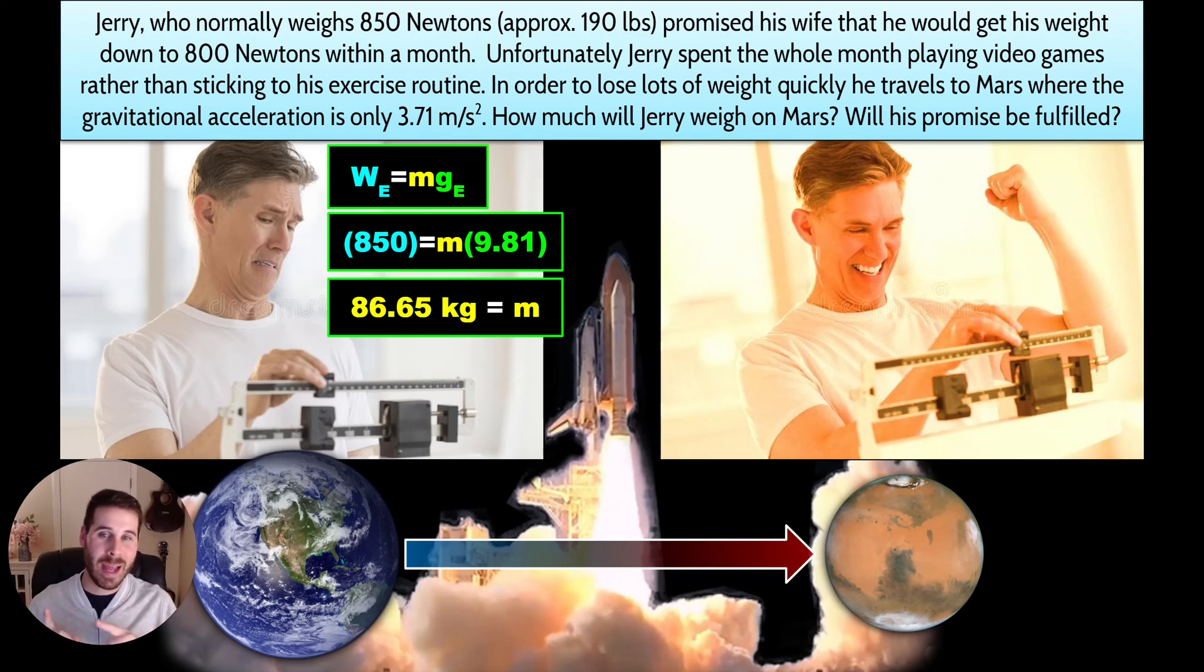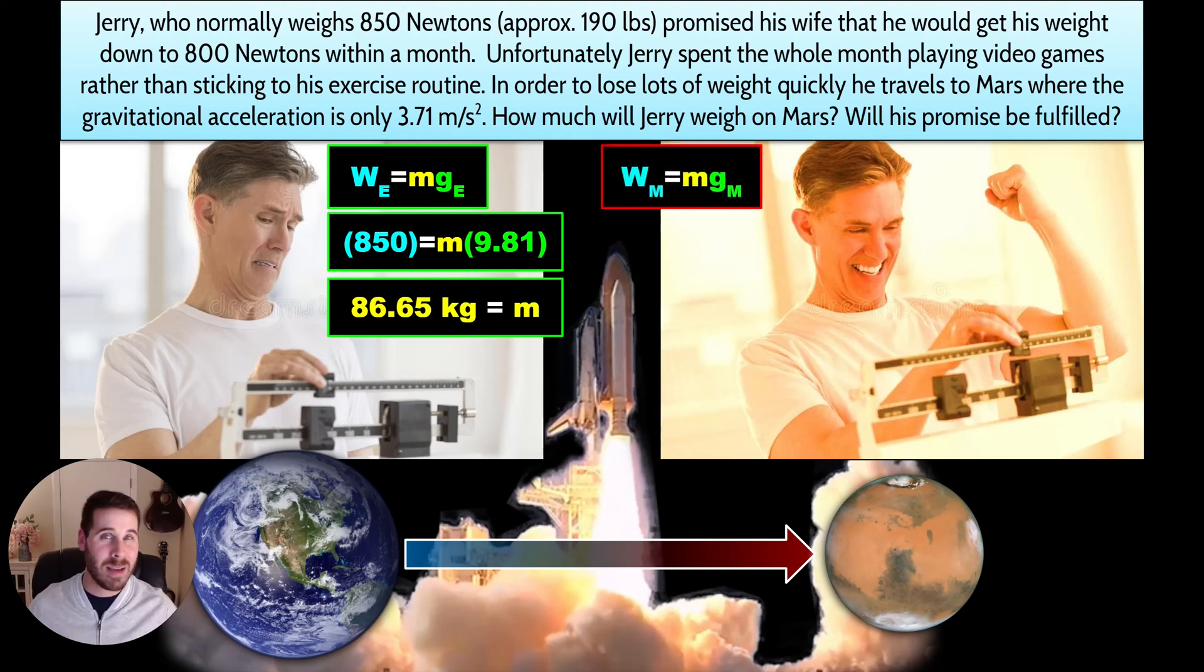So now I can transfer that number over to Mars, because as we discussed, when you jump from planet to planet, your weight changes, but not your mass, unless you were to eat an asteroid along the way, in which case your mass would change. That doesn't happen in this situation. So let's now take that same weight equation that we used for Earth, and let's use it with data for Mars. The final thing we're looking for is how much will Jerry weigh. So now it's that blue weight value that we're calculating. So the weight on Mars will equal Jerry's mass multiplied by gravity on Mars.